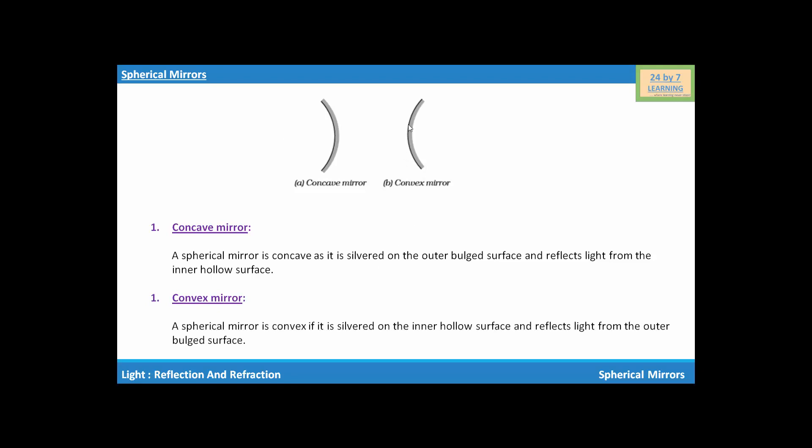A spherical mirror is a convex mirror if it is silvered on the inner hollow surface and reflects light from the outer bulge surface. So this is all about spherical mirrors.